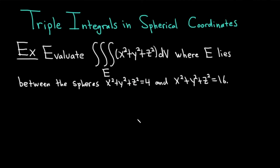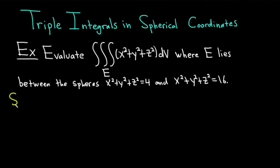Hi everyone, it's the Mathsorcer here with Chegg. In this video, we're going to discuss triple integrals in spherical coordinates. Our example is to evaluate the triple integral of x squared plus y squared plus z squared over E, where E lies between the spheres x squared plus y squared plus z squared equals 4 and x squared plus y squared plus z squared equals 16. Let's go ahead and work through it.